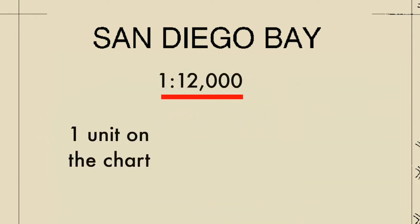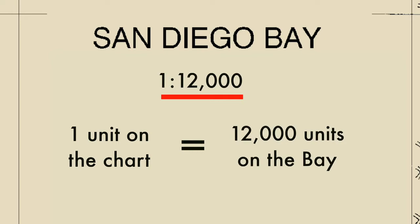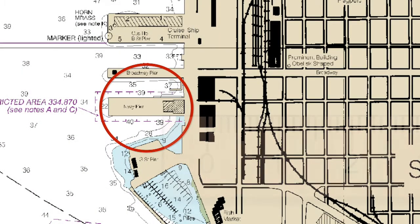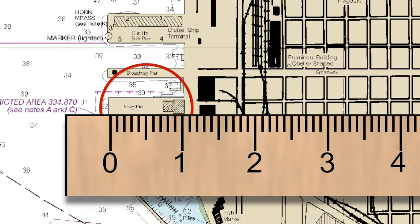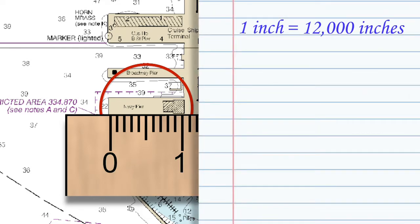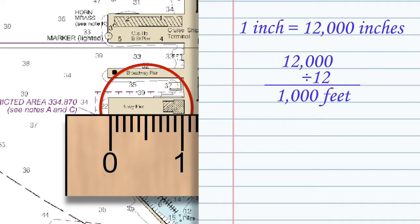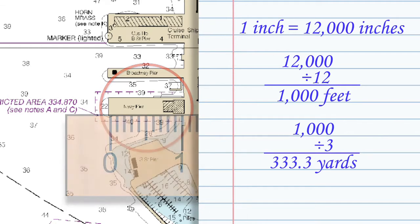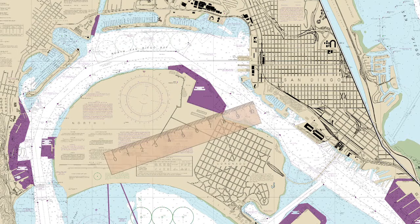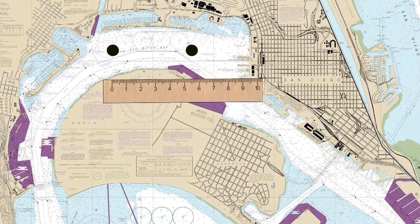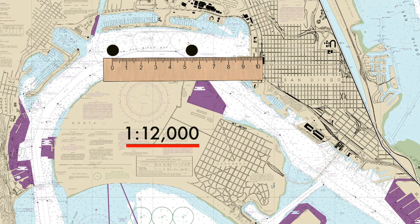This means that one unit of measurement on the chart is equal to 12,000 units on the actual bay. Let's apply the chart scale using a ruler to measure the length of the Navy Pier where the Midway Museum is located. We can see that the pier is exactly one inch long. One inch on the chart equals 12,000 inches on the bay. 12,000 inches divided by 12 inches in a foot equals 1,000 feet. How many yards is that? 1,000 feet divided by 3 feet in a yard equals 333.3 yards. That's the length of the Navy Pier — more than the length of three football fields. You can use a ruler to measure distances between two points anywhere on the chart. Knowing the scale used on a chart helps the navigator estimate the distances between any two locations.